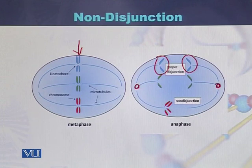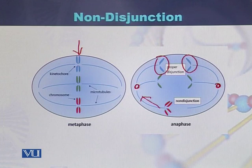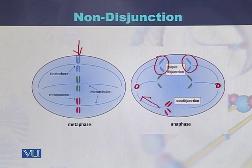On the other hand, if both sister chromatids are moving toward one direction, that is called non-disjunction. Proper separation between sister chromatids or between homologous chromosomes is called disjunction, and if there is non-disjunction, the separation between the homologous chromosomes fails.